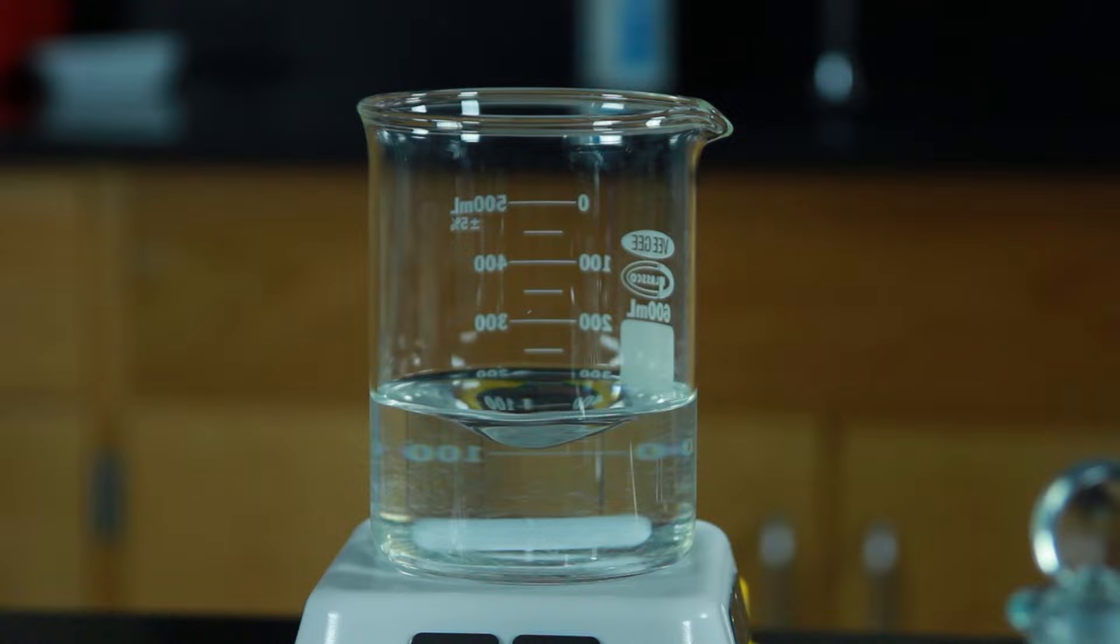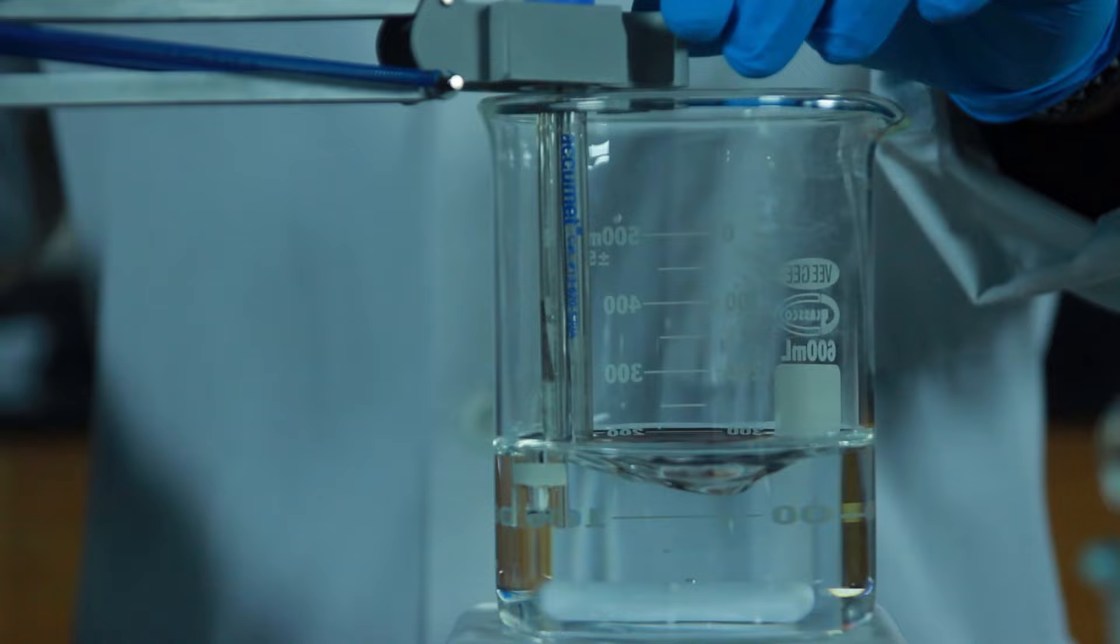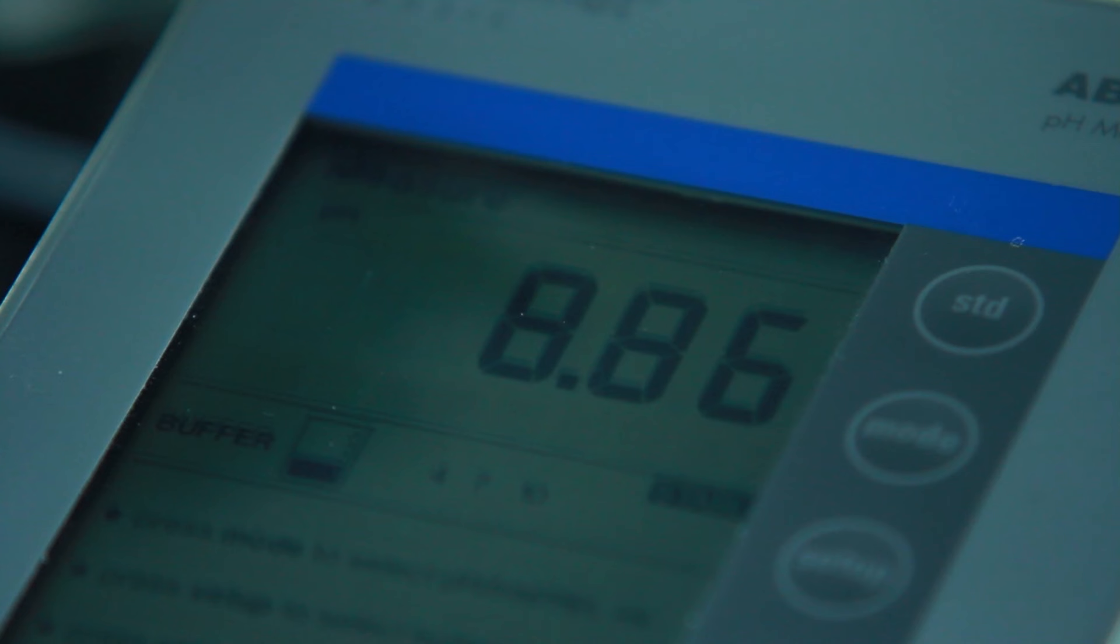Now we need to adjust the pH of our Tris buffer to reach our target pH of 7.8. Insert the pH meter probe into the solution. Be sure that you don't put the probe in too deeply because you don't want the stir bar to come into contact and damage the glass electrode. Watch the display and wait for the pH reading to stabilize. The current pH of the Tris is 8.86.